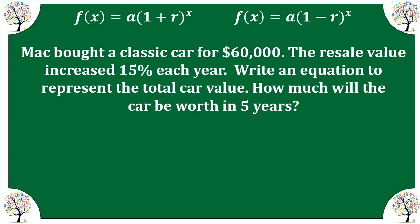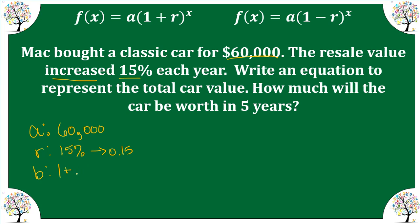Matt bought a classic car for $60,000. The resale value increased at 15% each year. We need to write an equation for the total car value. The initial price is $60,000. The rate is 15%, written as 0.15. Our b value, or growth factor, is 1 plus 0.15, which gives us 1.15. So F(x) equals 60,000 times 1.15 raised to the x.